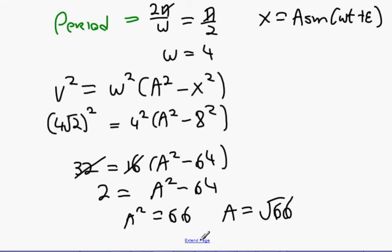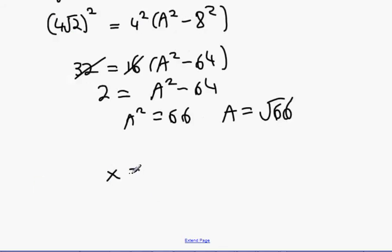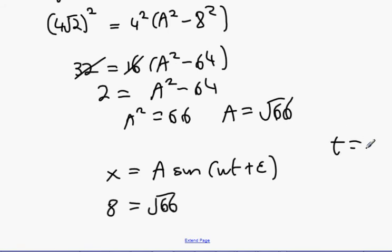Now, we then use our formula x equals a sine ωt plus ε or alpha, whichever you want to call it. It doesn't matter what you call it. Then we're going to have x is 8, its displacement is 8. Its amplitude is √66. Now, at t equals 0.